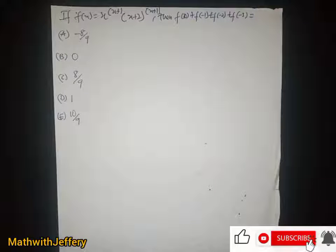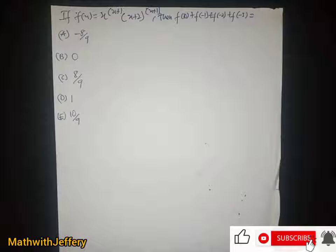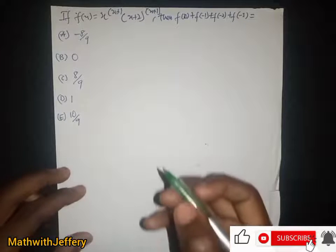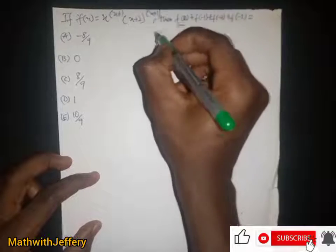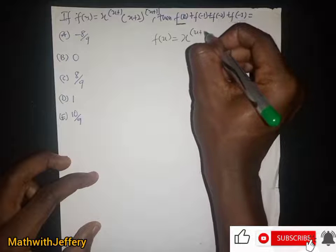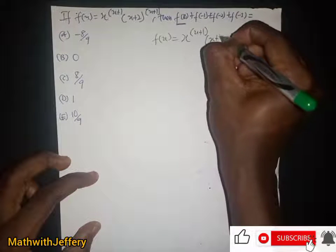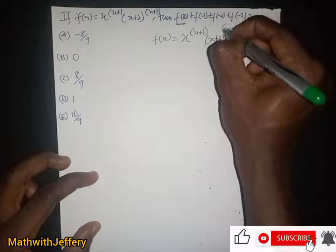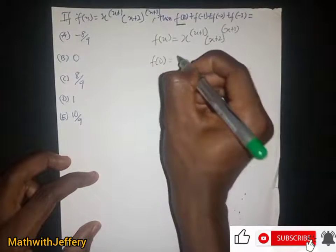Hello students, welcome once again to my channel. We have a question: if f(s) equals s to the power (s+1) multiplied by (s+2) to the power (s+1), then f(0), f(-1), f(-2), and f(-3) will be equal to what? Let's take the first value. We have f(s) = s^(s+1) · (s+2)^(s+1).